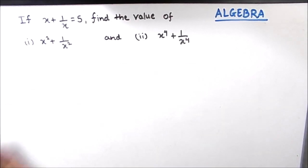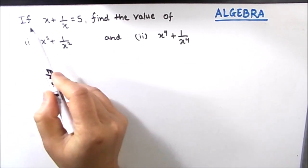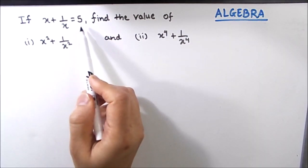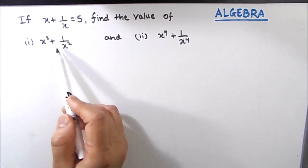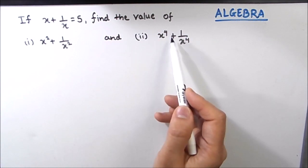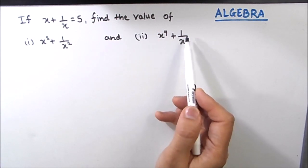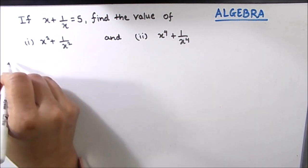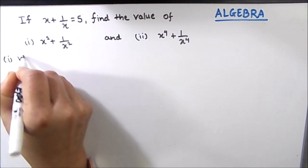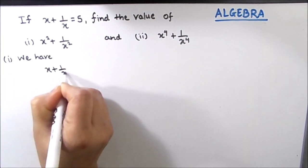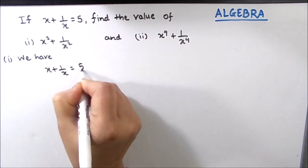Hello everyone. In this video we will be learning how to solve this question: if x plus 1 by x is equal to 5, find the value of x squared plus 1 by x squared, and the second one is x to the power 4 plus 1 by x to the power 4. So let's start with our first one. We have x plus 1 by x is equal to 5, which is given.